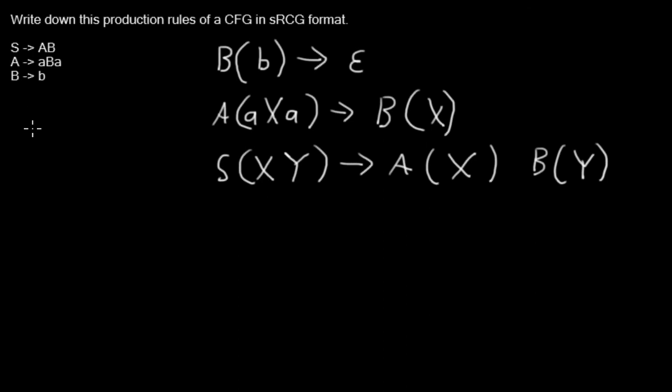And if you are doing the derivation with the context-free grammar, it might look like this. You have the S, you expand it to AB, you expand the A by aBa, which is concatenated with anything from second B and so on and so on. And the tree will look like this.